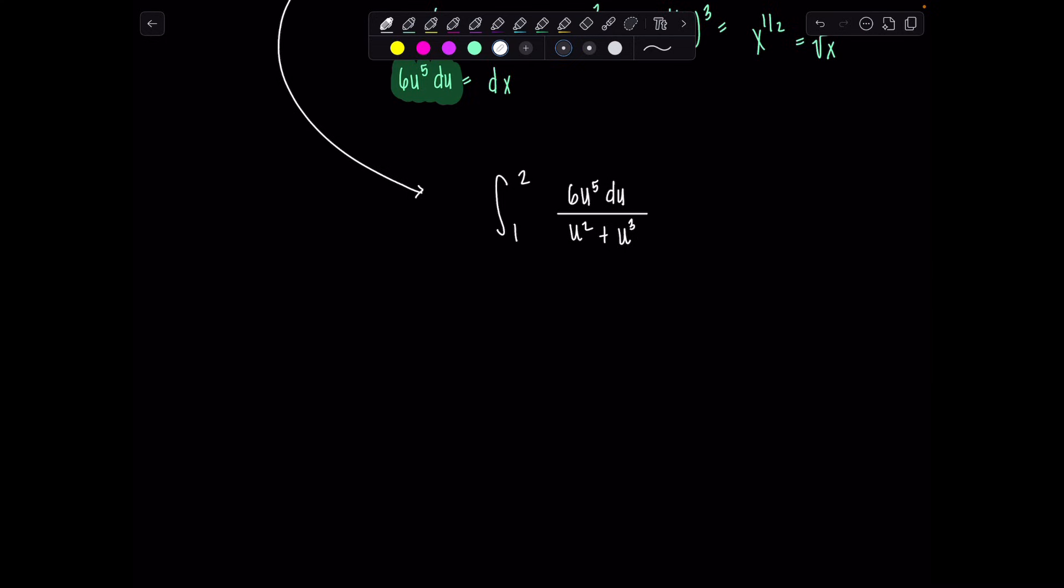Now let's clean this guy up. Let's take the 6 outside. We don't need him there. Integral 1 to 2. I can cancel out u squared from everybody. So now I have u cubed du over 1 plus u. Since the degree of the numerator is higher than the degree of the denominator, let's do some long division.